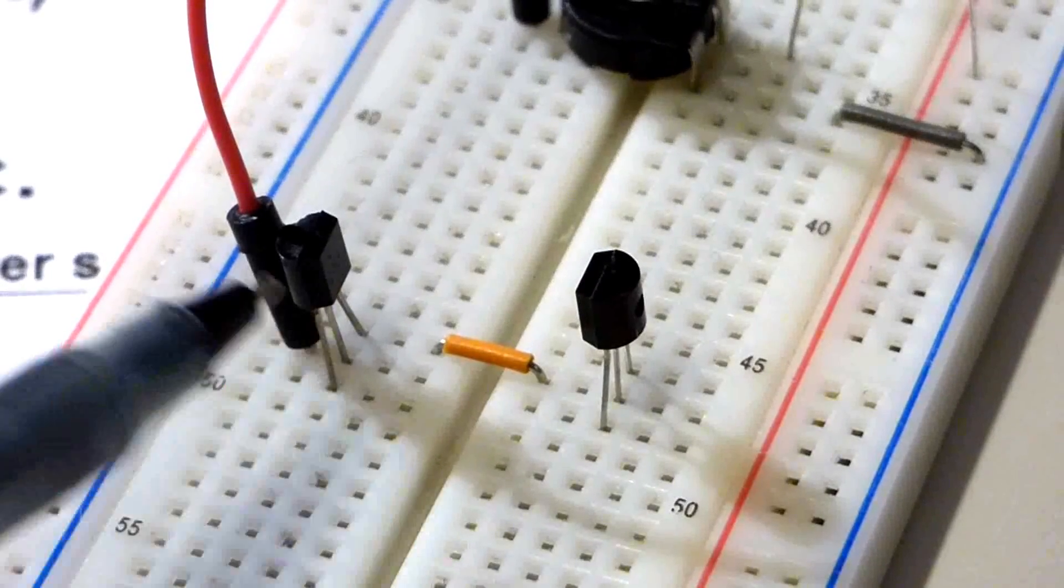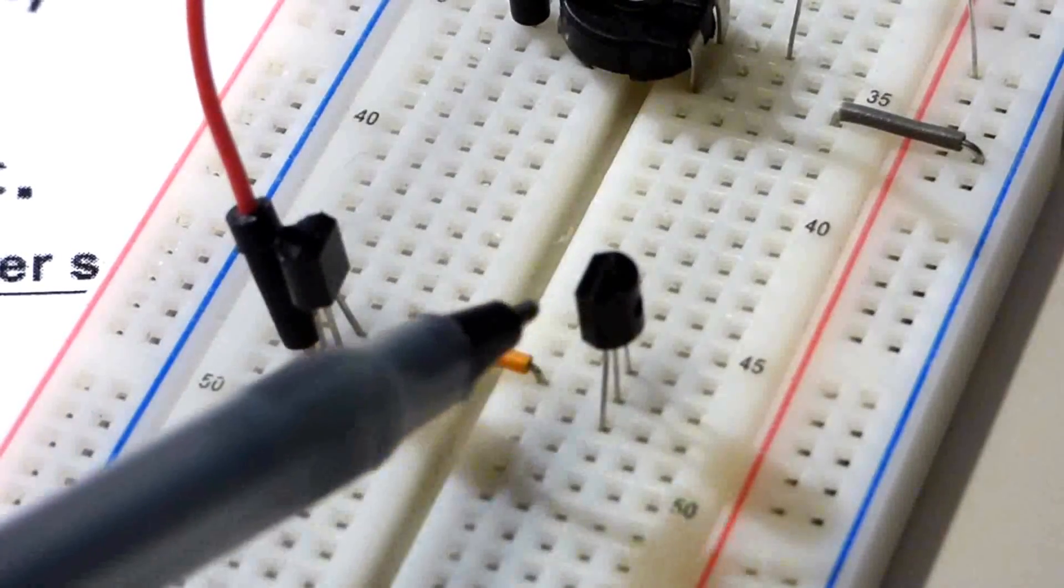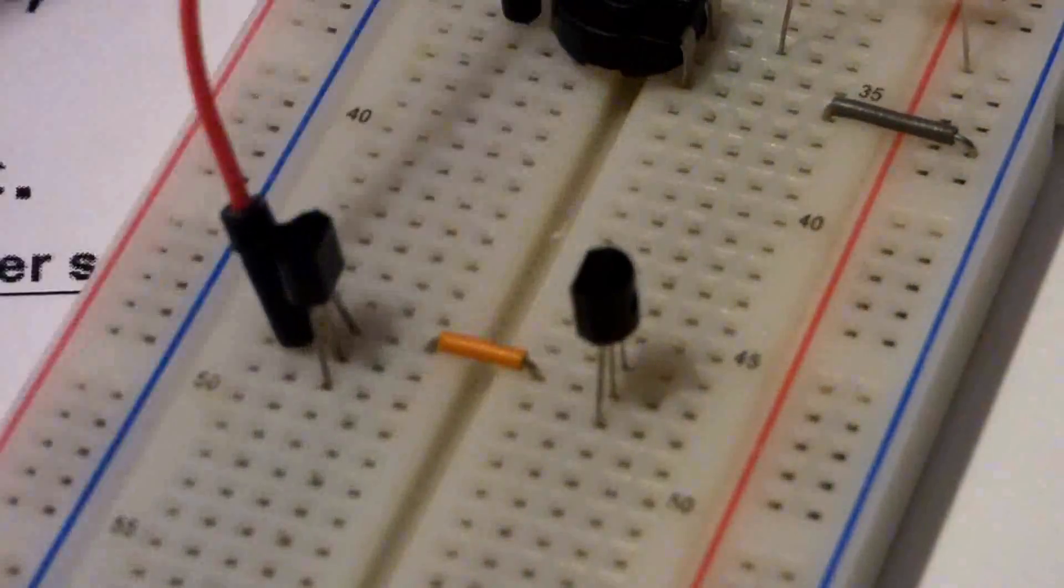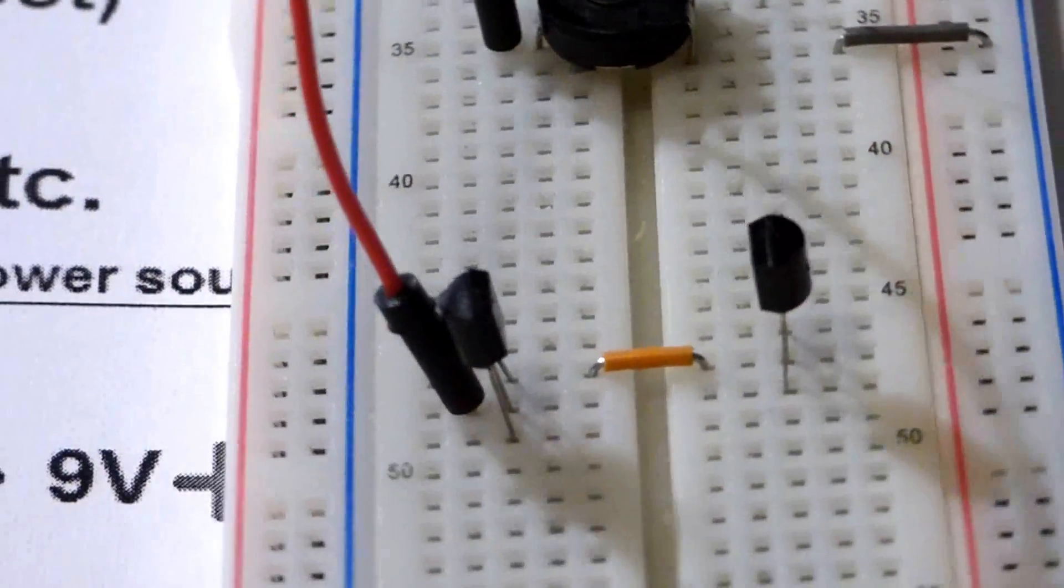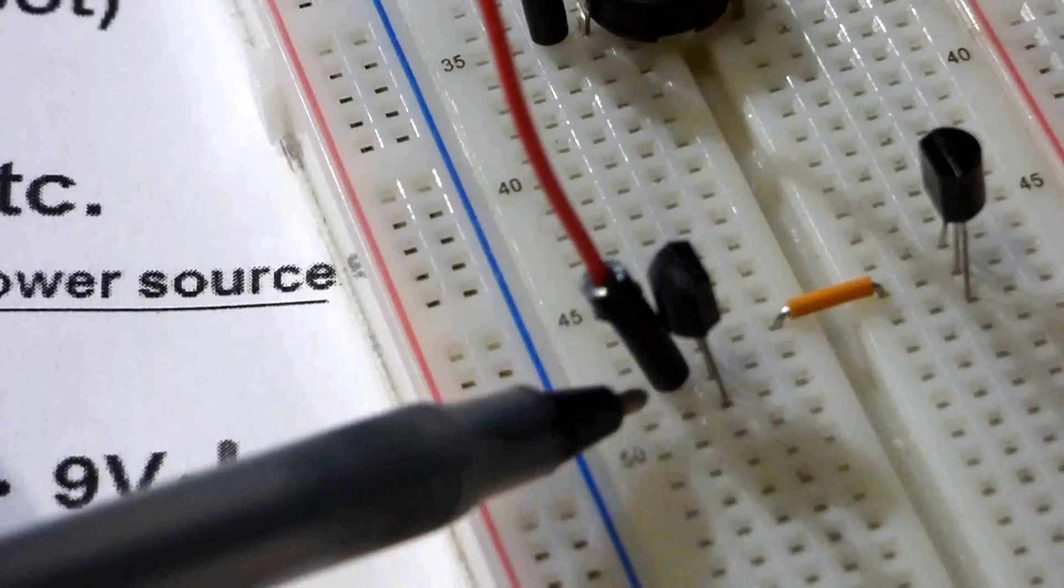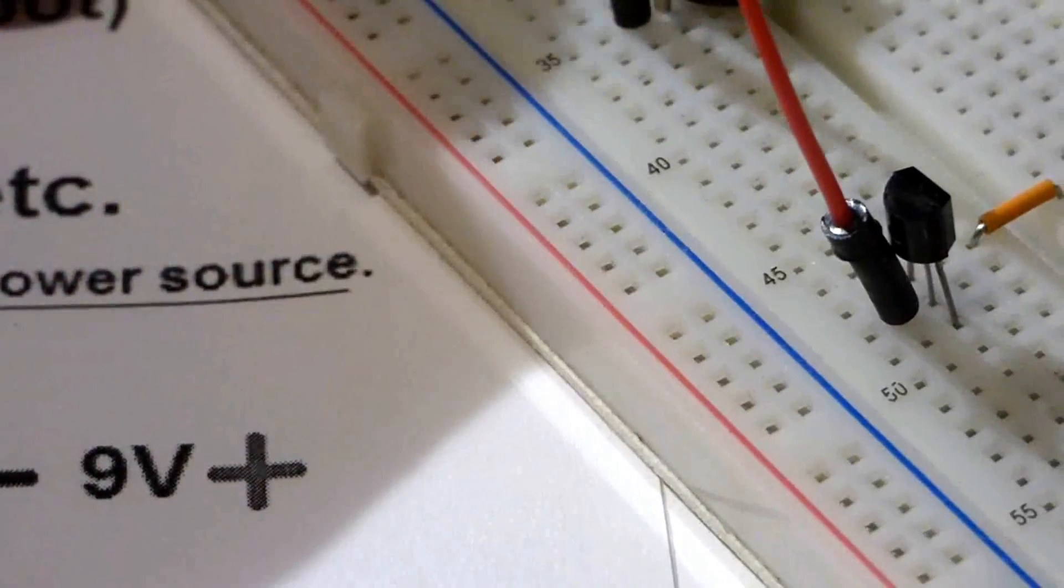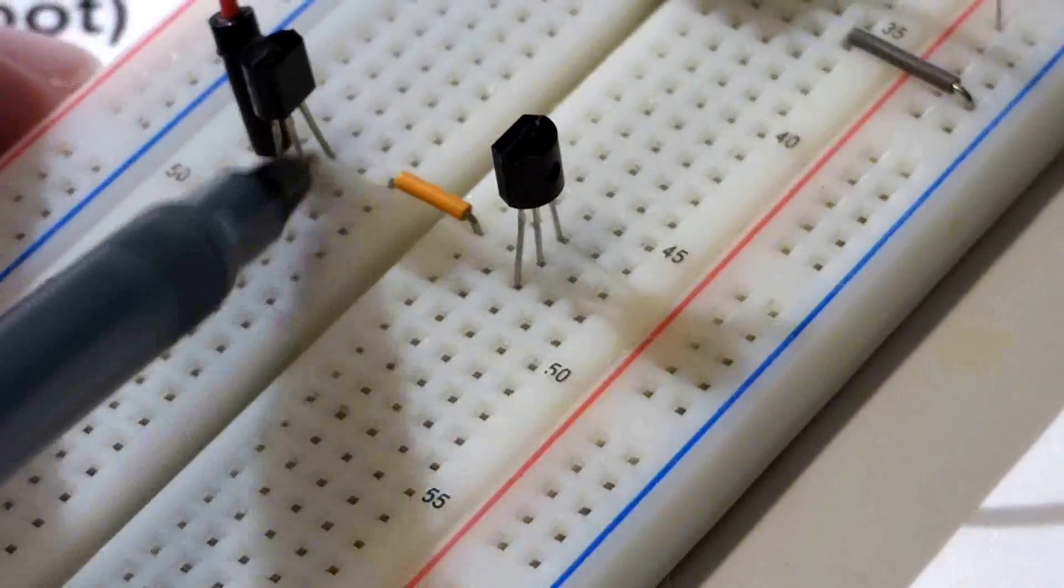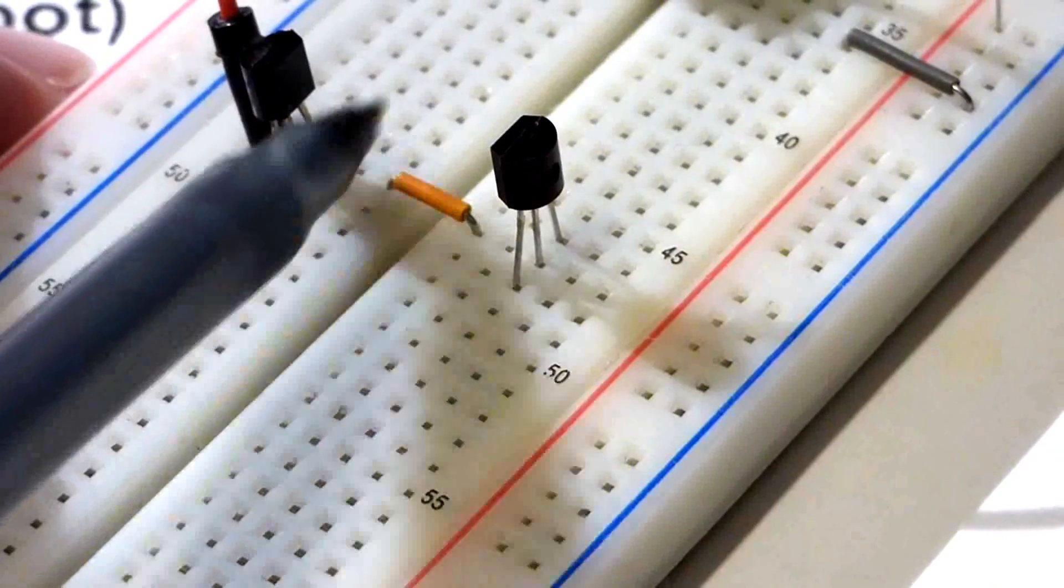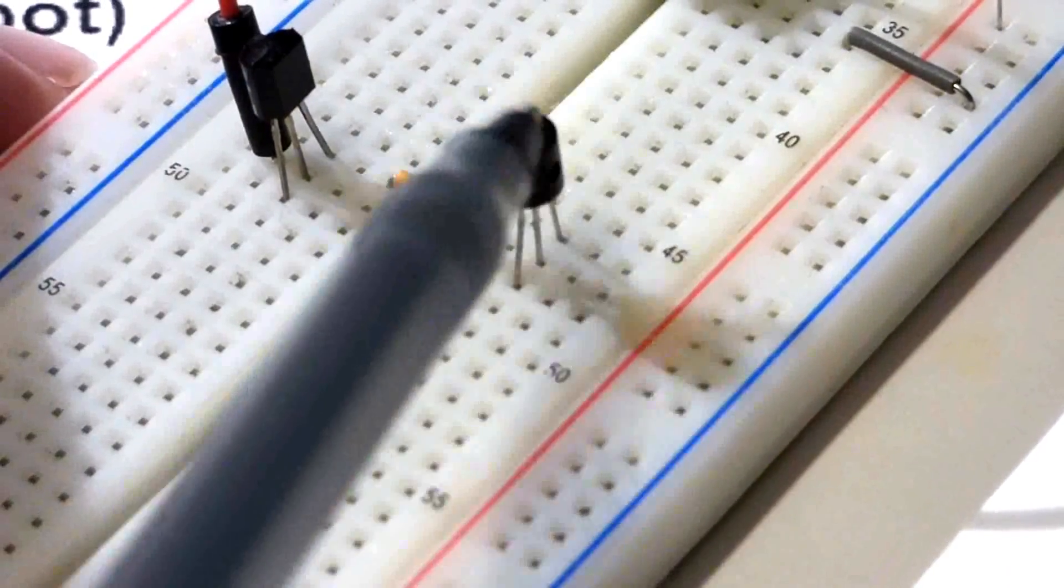Zooming up close, you see the flat edge of the NPN is to the right, and then the flat edge of the PNP is to the left. And I'll move that around a little so you can see a little more. And then the voltage divider comes to the base, the middle pin of the NPN.